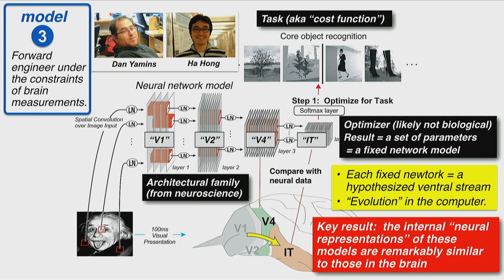When you do that, you actually do pretty well at explaining and predicting IT responses. From middle layers, you do pretty well at predicting V4 responses. I showed this with our network HMO, and also showed how more modern networks like AlexNet and VGG — their internal hidden features can do even slightly better than HMO by the exact same process. The main differences are small architectural changes, slight changes in the cost function and images used, and some changes in the optimizer.